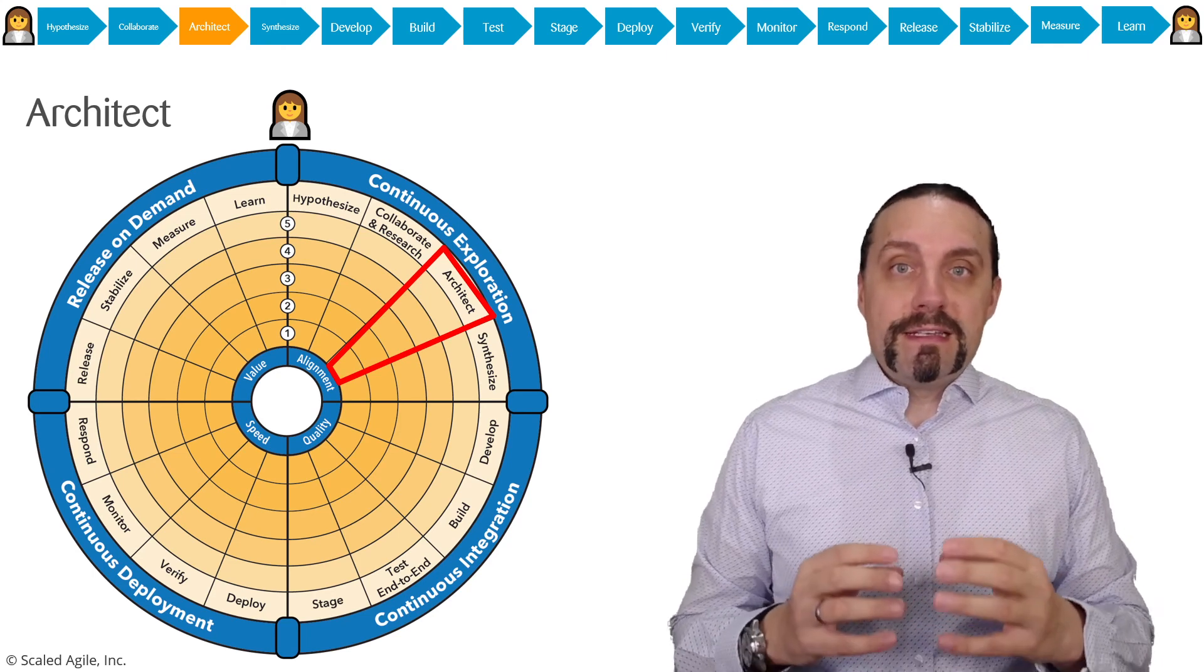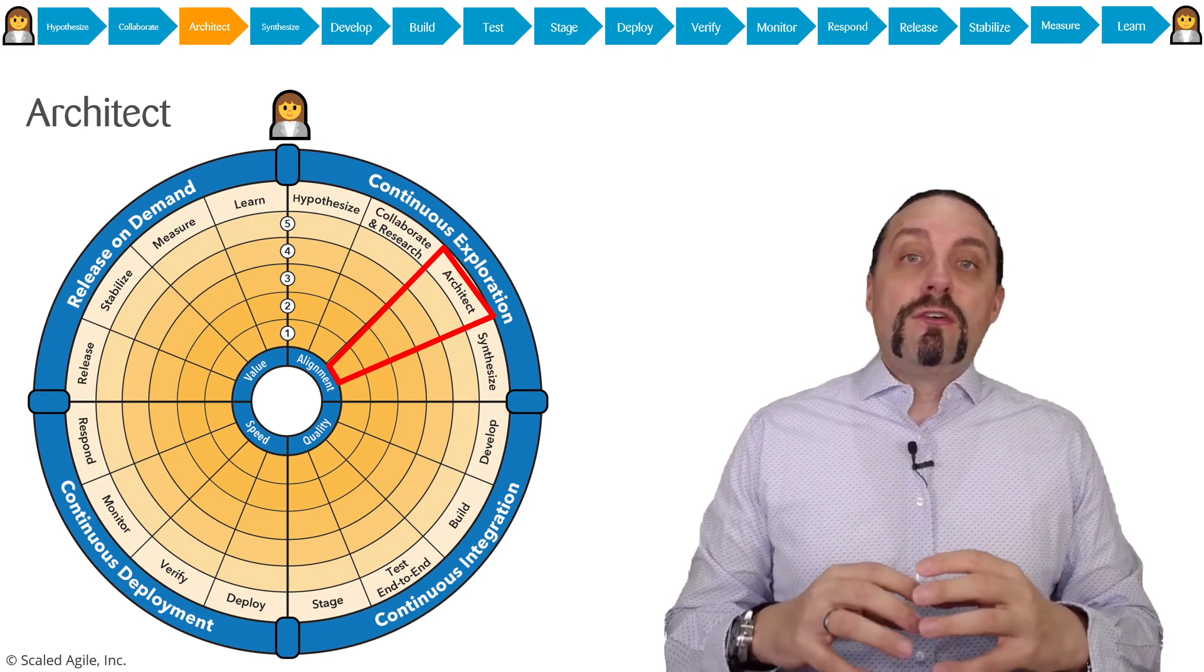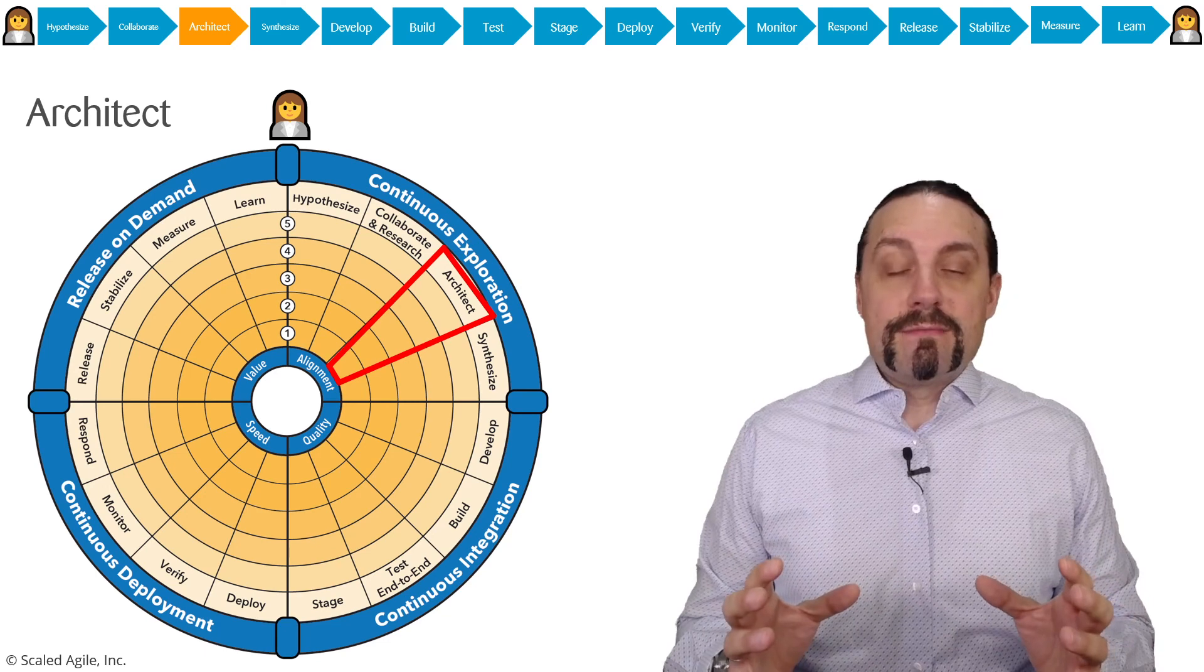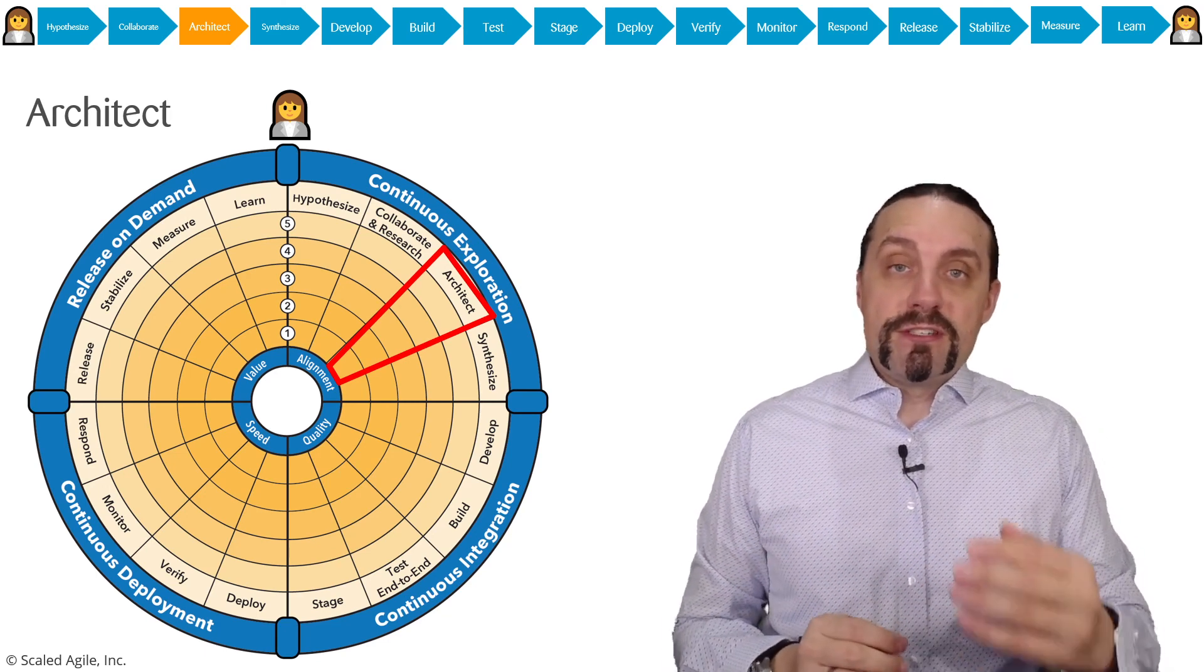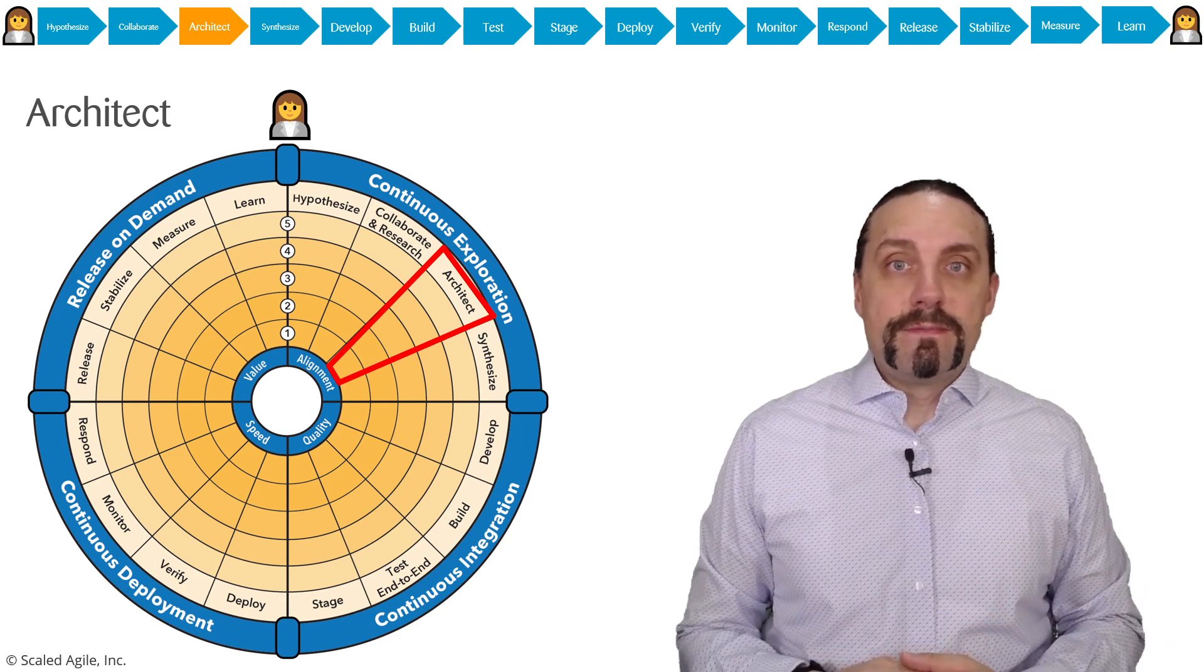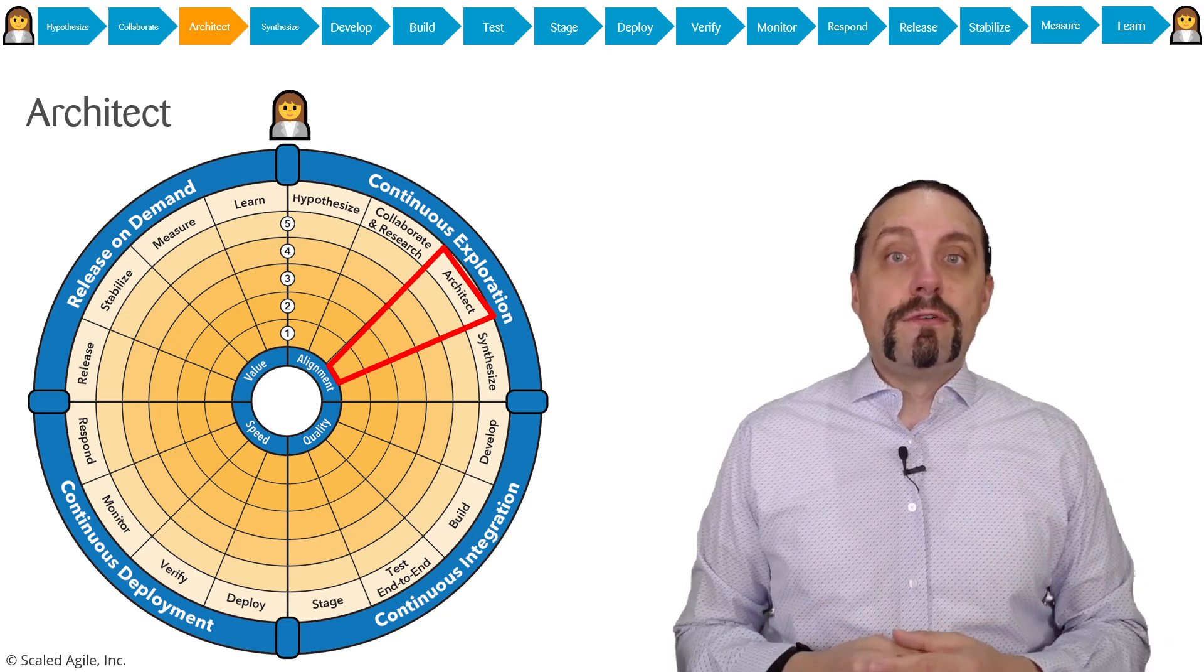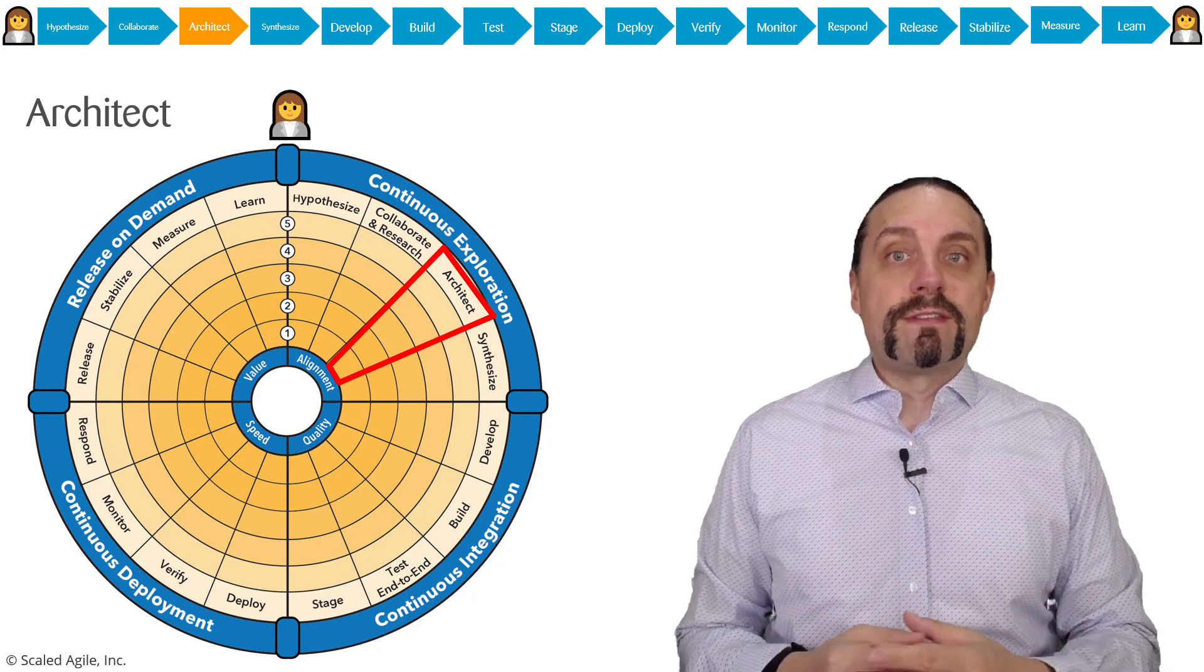And of course it's essential to not over-architect the system, to come up with the minimal architecture which is needed to prove the hypothesis. This is how we do architecture for continuous delivery.